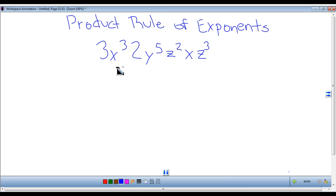So here we already have a sample problem set up. So first we look at the coefficient. Now here we have a 3 and a 2. You need to multiply them and that will get 6.